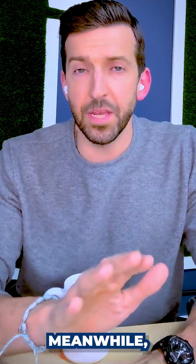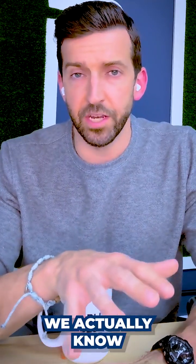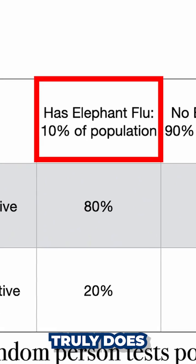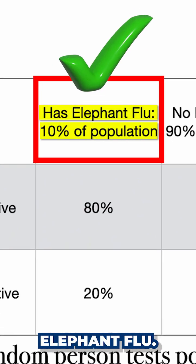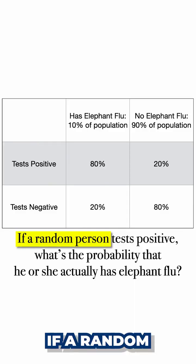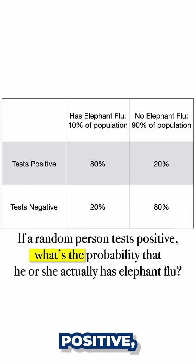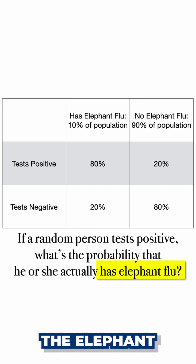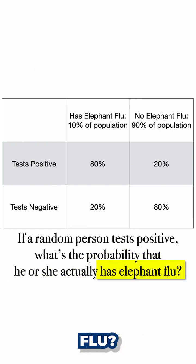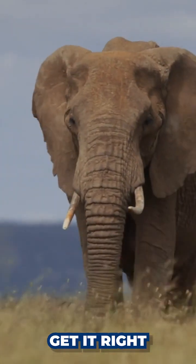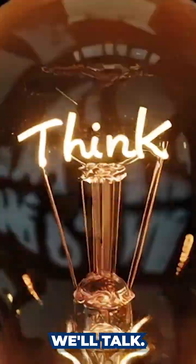Let's suppose that we actually know that 10% of the population right now truly does have the elephant flu. So here's the question: if a random person tests positive, what's the probability that he or she actually does have the elephant flu? Think about it, see if you can get it right, and then we'll talk.